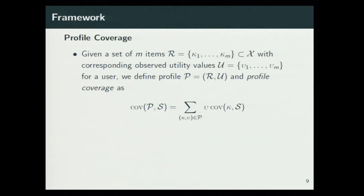Now we extend the definition of point coverage to profile coverage. Given a set R of M items and a corresponding set U of utility values for those items for a given user, we define the profile of that user as the pair R and U. The profile coverage is defined as the linear combination of the point coverage for items in the set R, weighted by the corresponding utility values. The idea behind point coverage and profile coverage is to measure how well the set S covers the items in the set R — a higher profile coverage value for a set indicates that S covers R well.